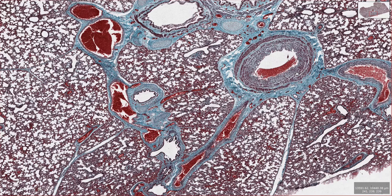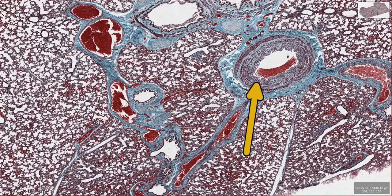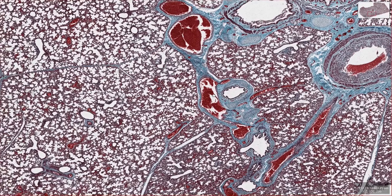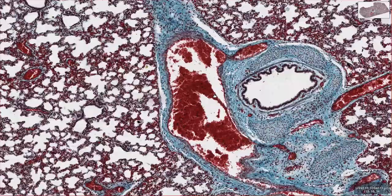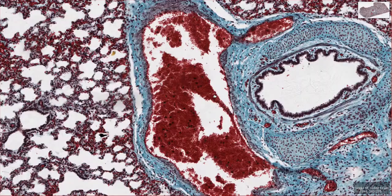This is a section of lung from a calf, and in the lung there are lots of tubular structures that you might confuse with blood vessels. If you look at this section here we can clearly see an artery and lots of veins. We can tell that they're arteries and veins because of their structure and mainly because they've got lots of red blood cells in them.